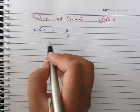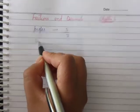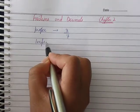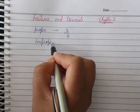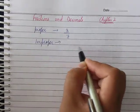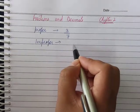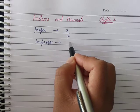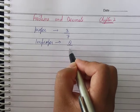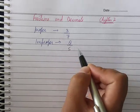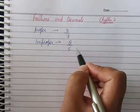An improper fraction is one where the numerator is greater than the denominator — the numerator is the greater value and the denominator is the smaller value.